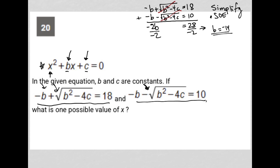I have one of my constants. Now I have to find my c value. I'm going to take this -14 and plug it back into this top equation: -(-14) + √((-14)² - 4c) = 18. So this becomes 14 + √(196 - 4c) = 18.